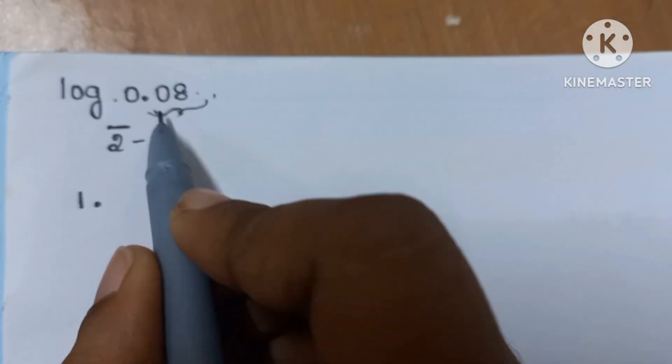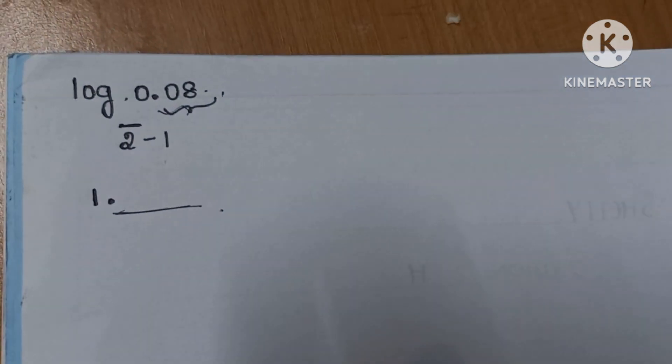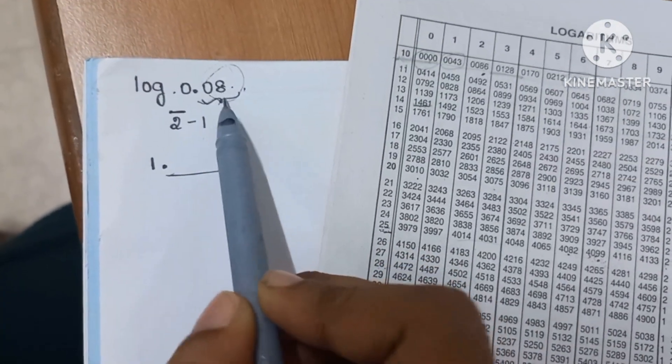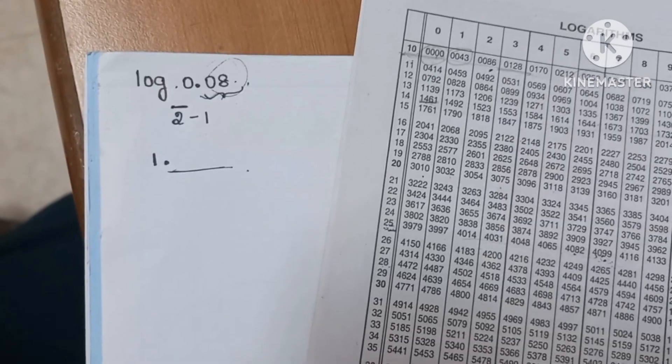To find the numbers after this, that is 1 point, we will start our calculations now. So we have a hint that is 8. So we will use our log book and find the respective value.